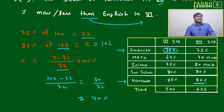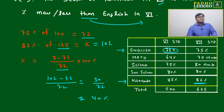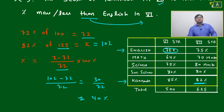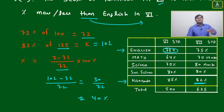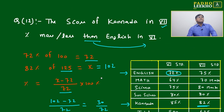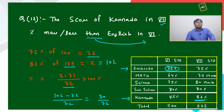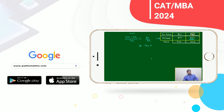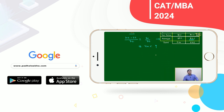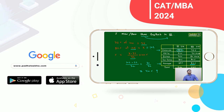So x equals 125 percent of 82, which is approximately 102. Then: 102 minus 72, divided by 72, equals 30 divided by 72. Since 50 percent of 72 is 36, and 30 is a little less than 36, the answer is around 40 percent. So the score of Kannada in seventh is approximately 40 percent more than English in sixth — it is increasing since 102 is more than 72.